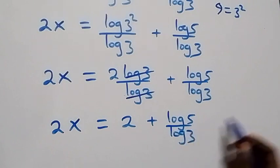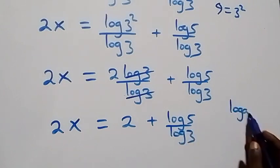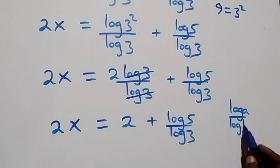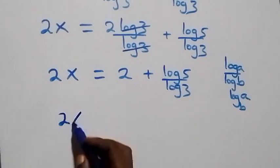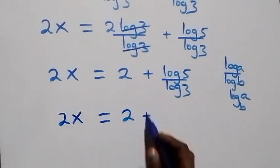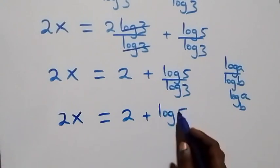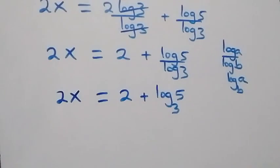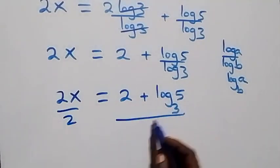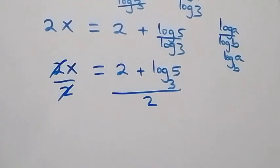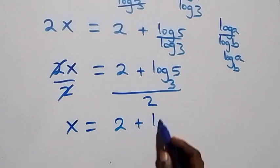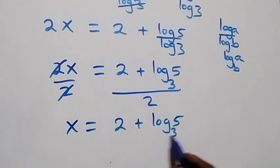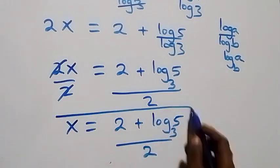Applying the change of base rule — when we have log a over log b, this is the same thing as log a to base b — what we have here becomes two x equals to two plus log five base three. And from here we divide both sides by two; two cancels, and we can write this as x equals to two plus log five base three, all over two. So here we have the value of x.